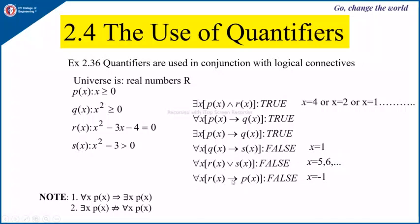Then 'for all x, r(x) implies p(x)' is also false; the counter example is x equal to minus 1. Note: 'for all x, p(x)' implies 'there exists x, p(x)' — because if p(x) is true for all x, then there is at least one x for which p(x) is true. However, 'there exists x, p(x)' does not imply 'for all x, p(x)' — because there may be some x for which p(x) is false, so you cannot claim it is true for all x.